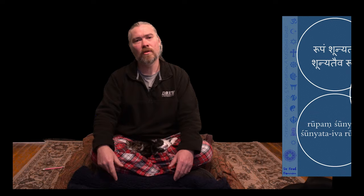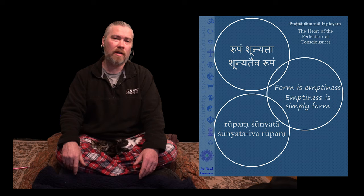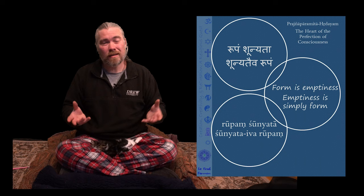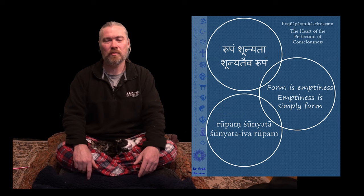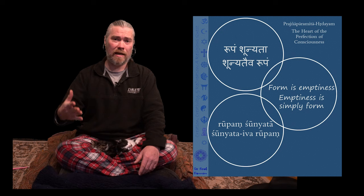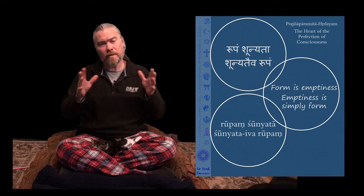Many Buddhists see the circle as representing this famous and quite influential passage from the Heart Sutra, which goes simply: rupam shunyata, shunyateva rupam — form is emptiness and emptiness is simply form. This is a very deep philosophical insight which we'll discuss more, particularly when we get to Buddhist philosophy and Buddhist enlightenment.